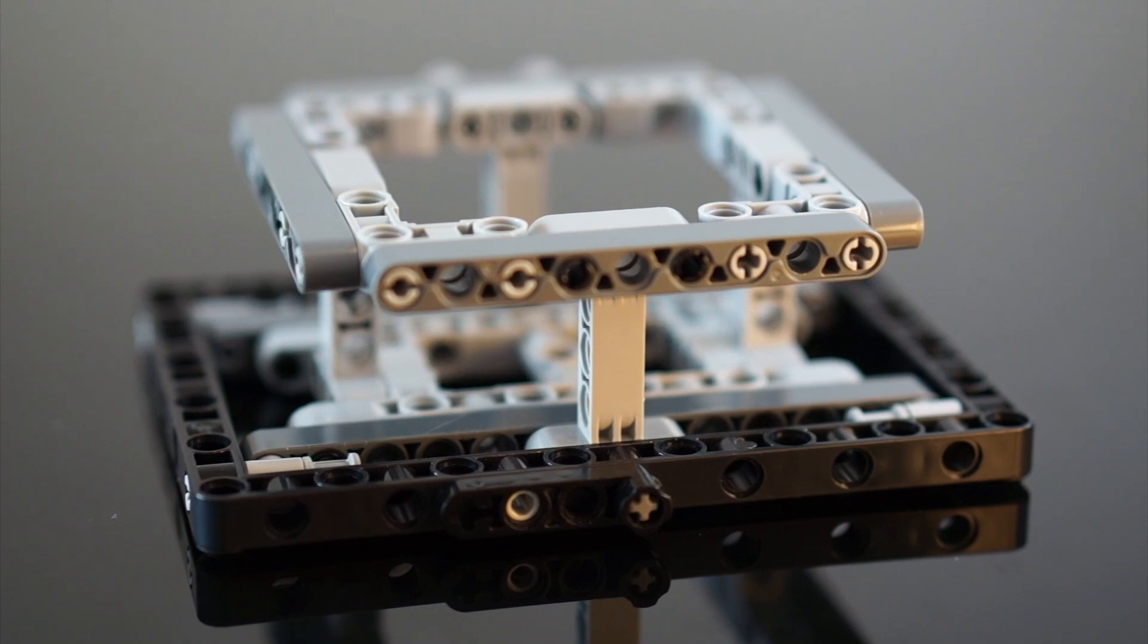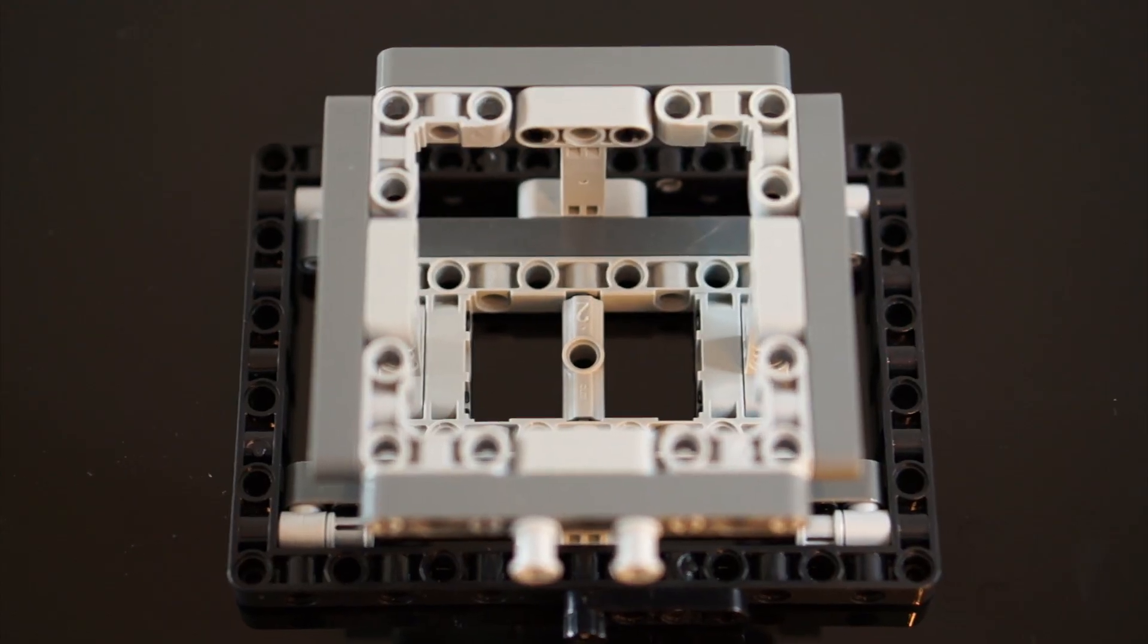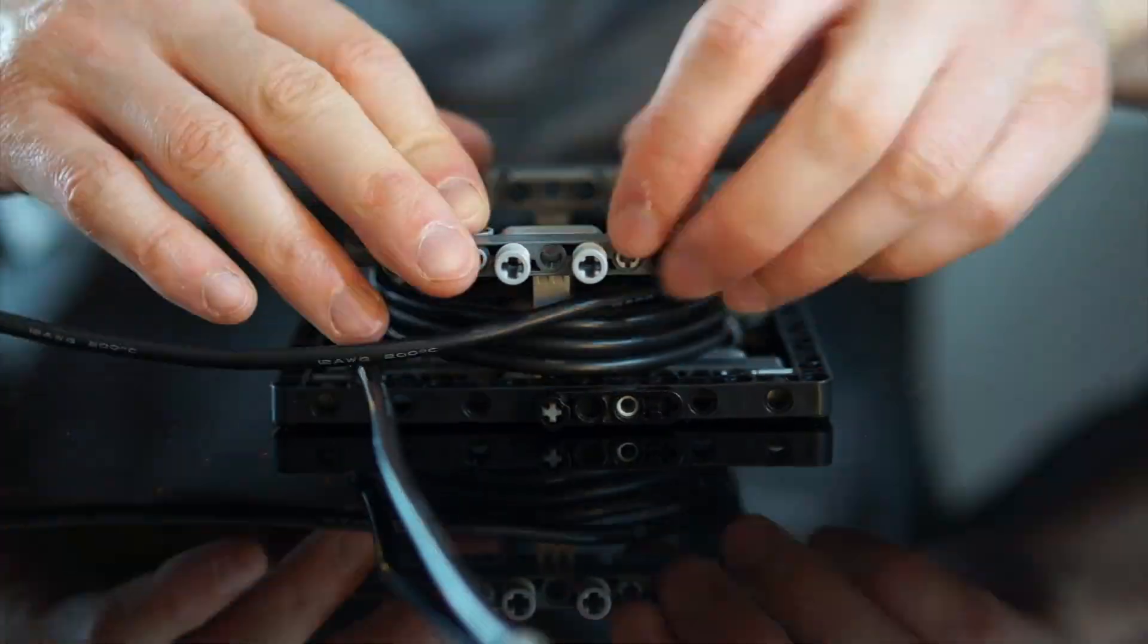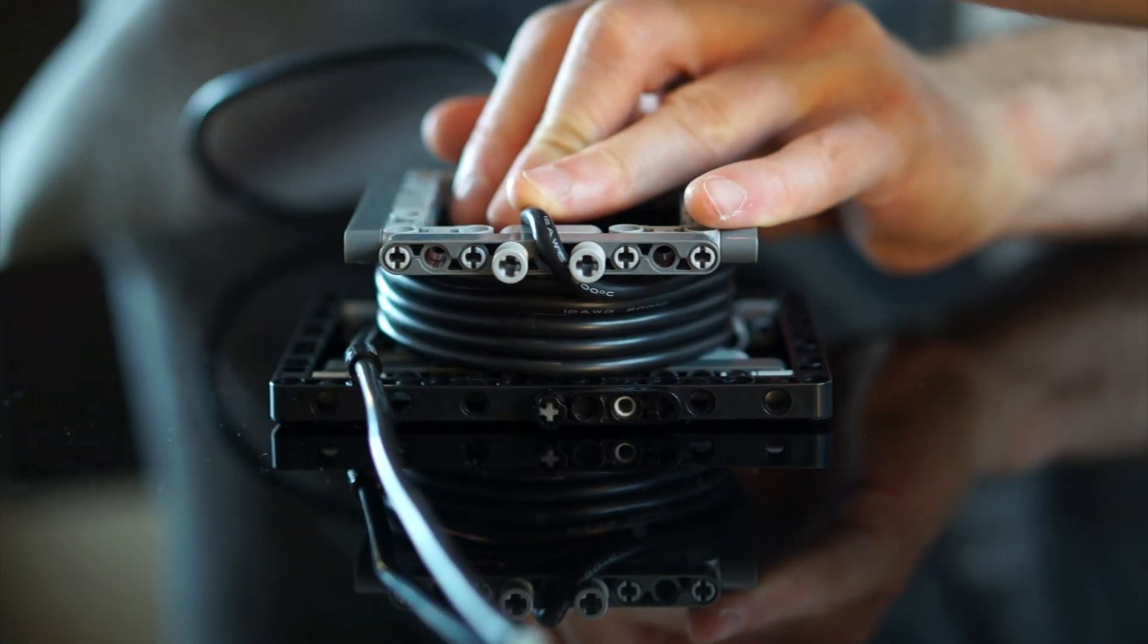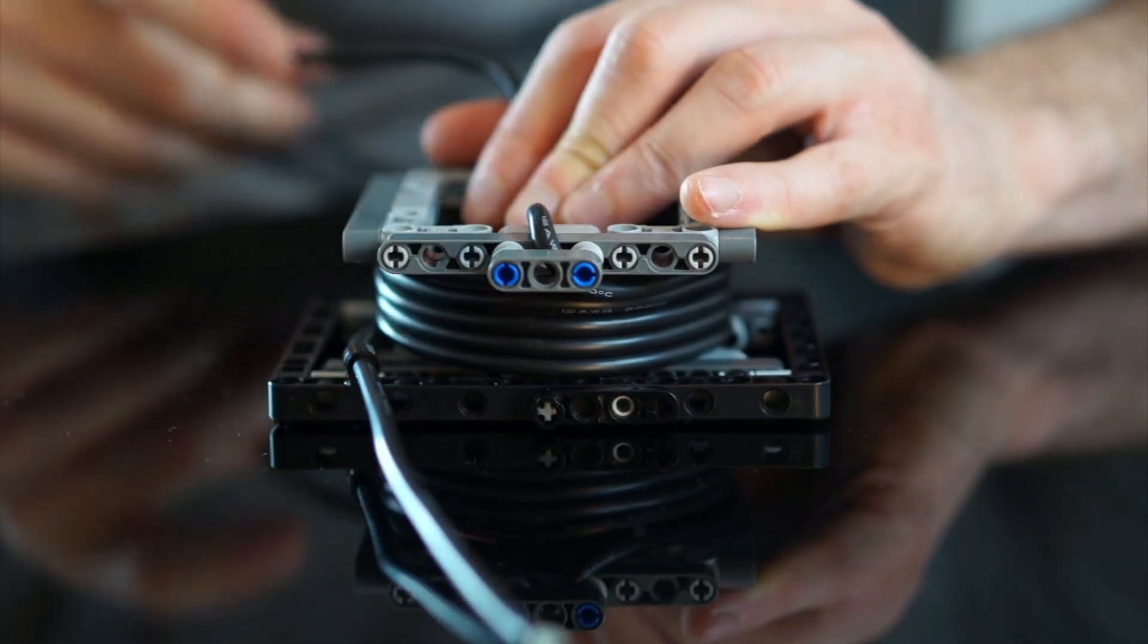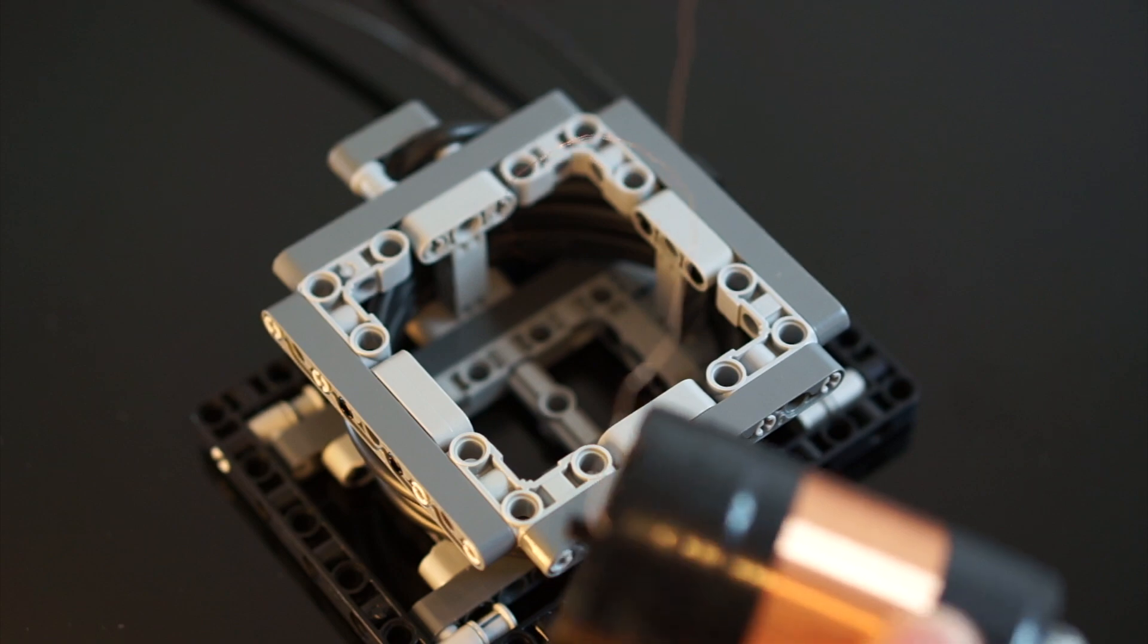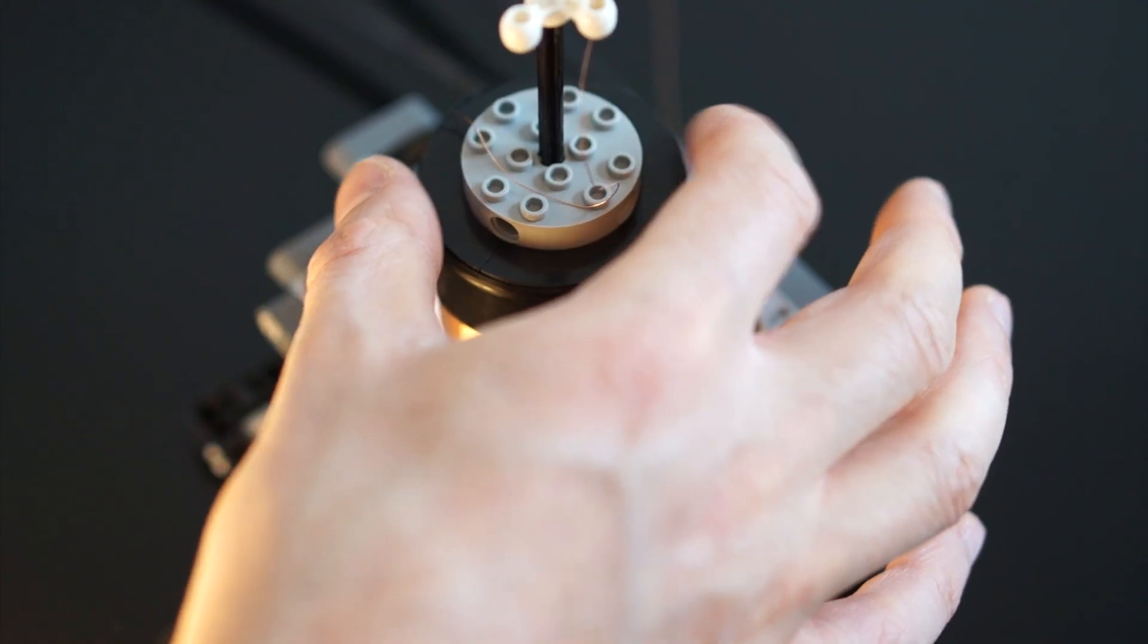This shape here will allow us to make easy adjustments to the primary windings. For the primary I'm gonna use this thick 12 gauge wire around five and a half turns of it. And now we can pop the secondary into the primary housing.